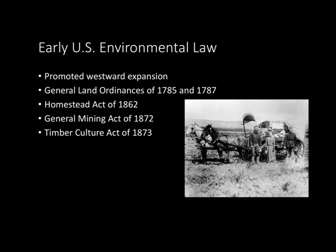Now let's look at early U.S. environmental laws. These laws, spanning from the late 1700s through the late 1800s, were essentially used to promote westward expansion and cultivation. There was the General Land Ordinances of 1785 and 1787, the Homestead Act of 1862, the General Mining Act of 1872, and the Timber Culture Act of 1873. Most of these were basically giving people free land in the west so they went out and started cultivating it. The Timber Culture Act said that people who went out west would get extra land if they started growing trees on it.